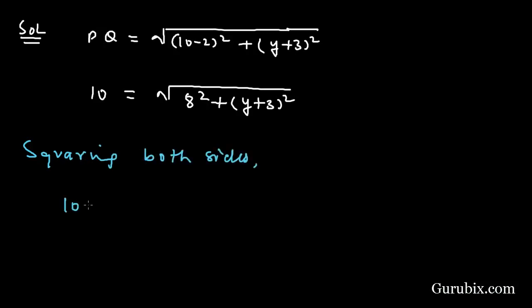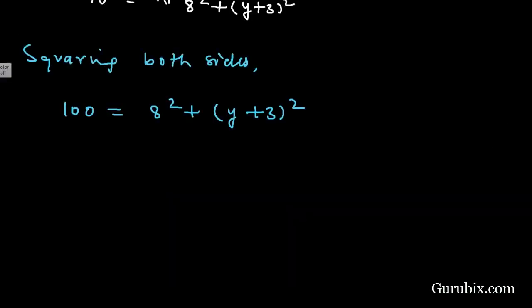Then it will be 10 squared means 100 and here we have 8 squared plus (Y + 3) squared. If we further solve this value, this is equals to 100 minus 64, because 8 squared equals 64.